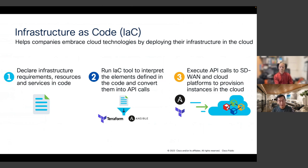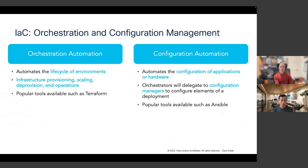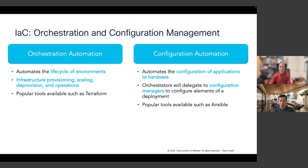In Infrastructure as Code, there are two aspects more important than any other: orchestration and configuration. Orchestration focuses on the life cycle of environments — provisioning infrastructure, scaling, or deprovisioning. Terraform is one of the most popular tools for this. Configuration management focuses on automated configuration of application software or hardware, and Ansible is one of the most popular tools for that.